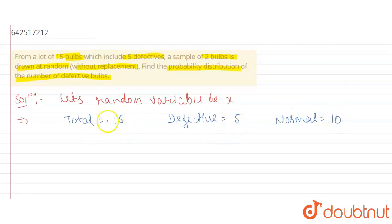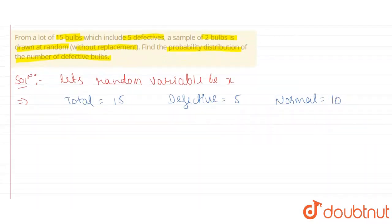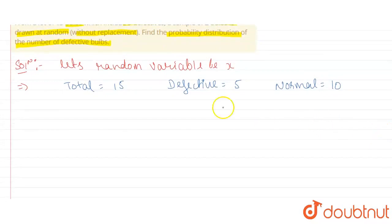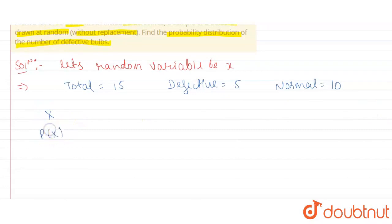Because 5 are defective, then 15 minus 5 is 10 bulbs. So, make a table with X and probability P(X).